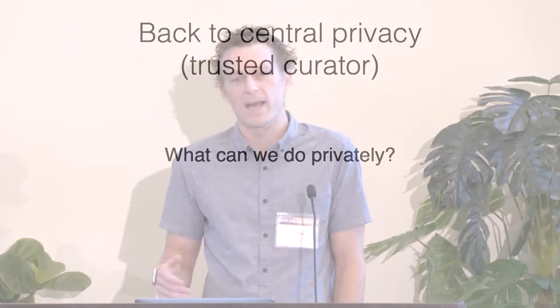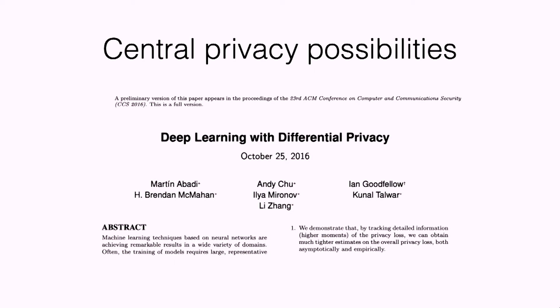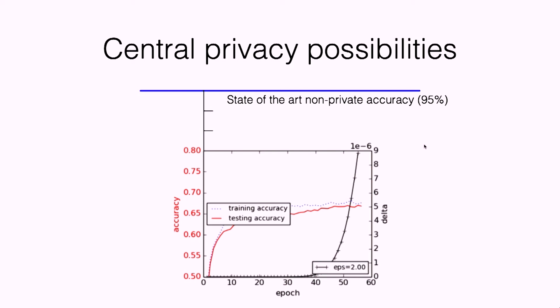Now let's move back to central privacy — where you trust the people collecting the data because they're your doctor, Google, Apple, whoever. In 2016, some colleagues at Google showed you can do deep learning with differential privacy if you trust them to collect the data. On an image classification data set (CIFAR-10) with privacy parameter epsilon equals two, they get about 65% accuracy. But to be honest, the state-of-the-art accuracy is 95%, so they're 30% off. The U.S. Census Bureau is actually doing differential privacy, and Raj Chetty at Harvard uses it to understand social mobility in different zip codes — making maps of which zip codes increase or decrease social mobility.